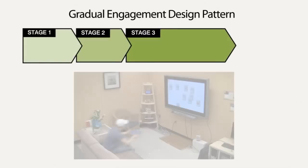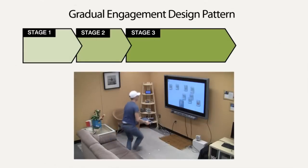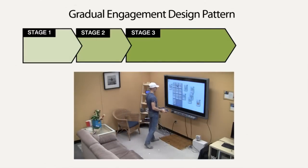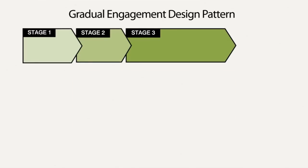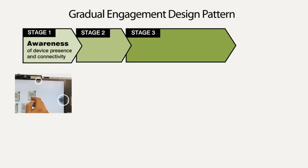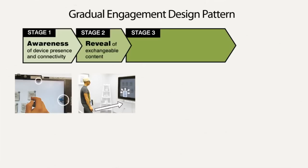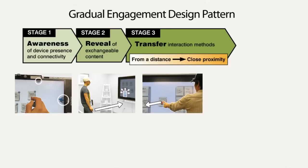The Gradual Engagement Design Pattern helps to mitigate these problems. It describes how engagement increases continuously across three stages as people move and orient their personal devices towards other surrounding devices. First, providing awareness of device presence and connectivity. Second, progressively revealing exchangeable content. And third, offering interaction methods for transferring content between devices.